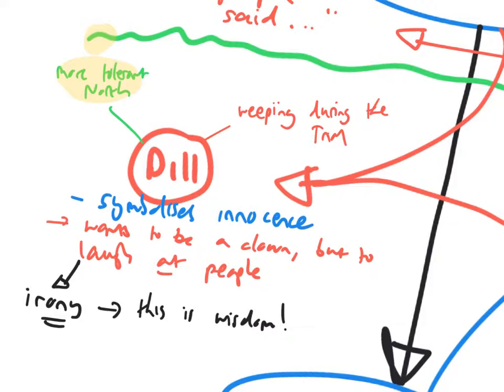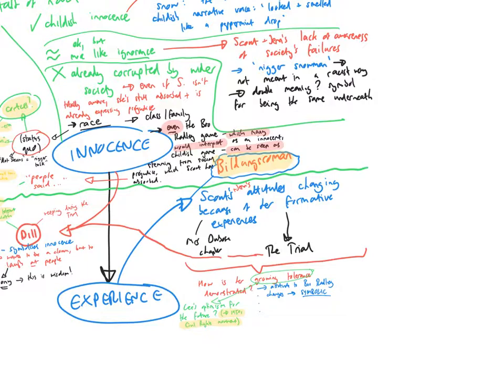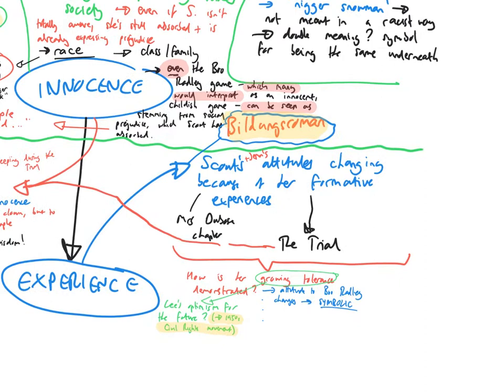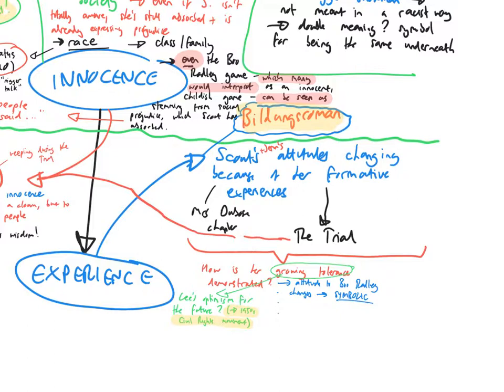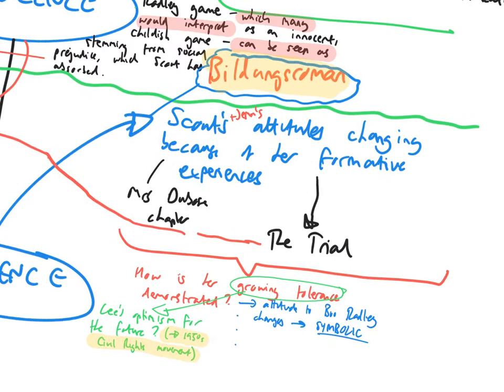Let's return then to how Scout and Jem's attitudes change because of their formative experiences. The ways in which Scout grows from innocence to experience. Remember that key transition, innocence to experience. So, as we know, and we're looking back to the themes of prejudice and the themes of tolerance here, Scout's attitude changes throughout the novel after some of the key educational experiences that she has.